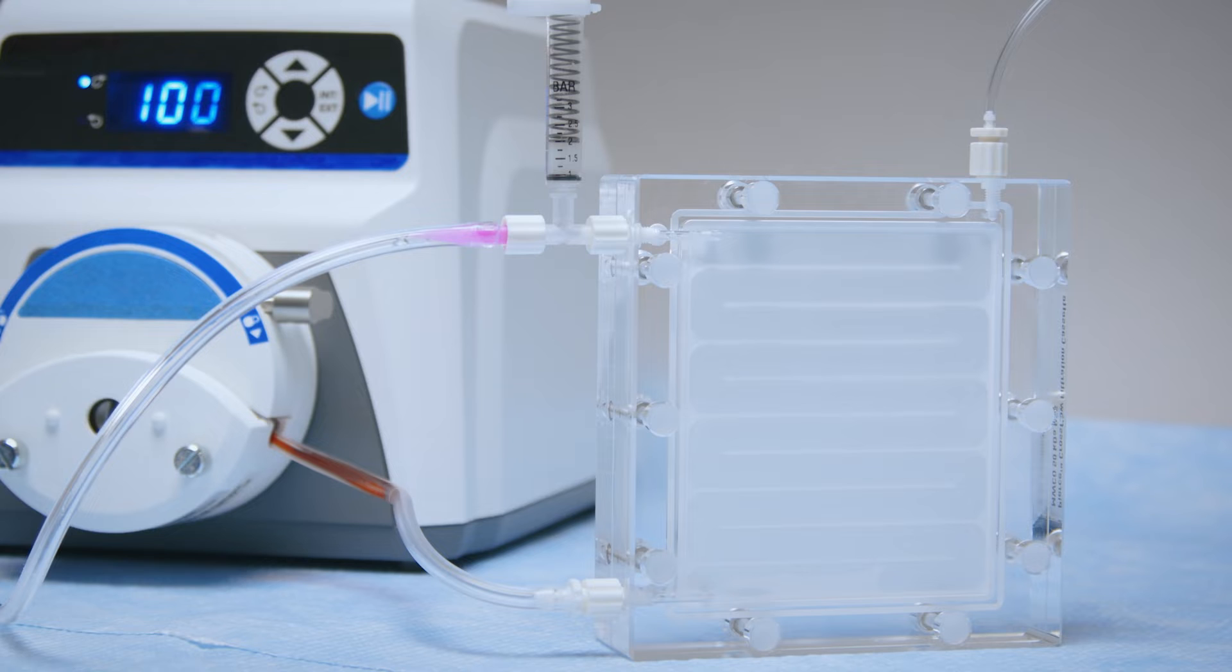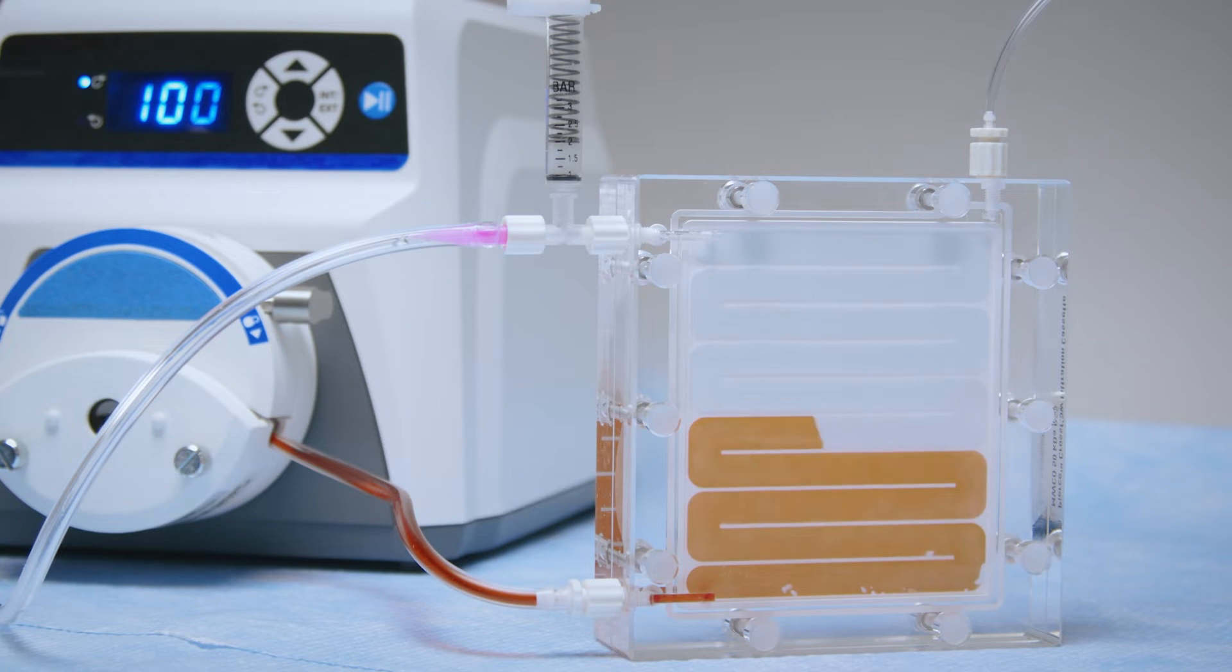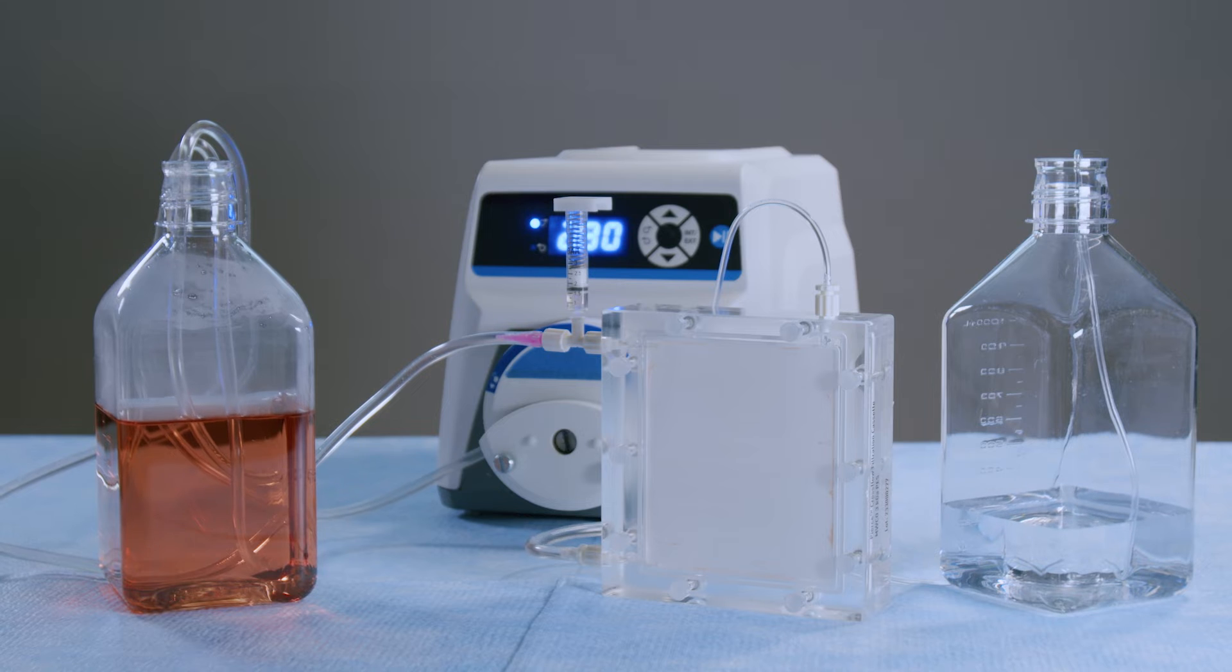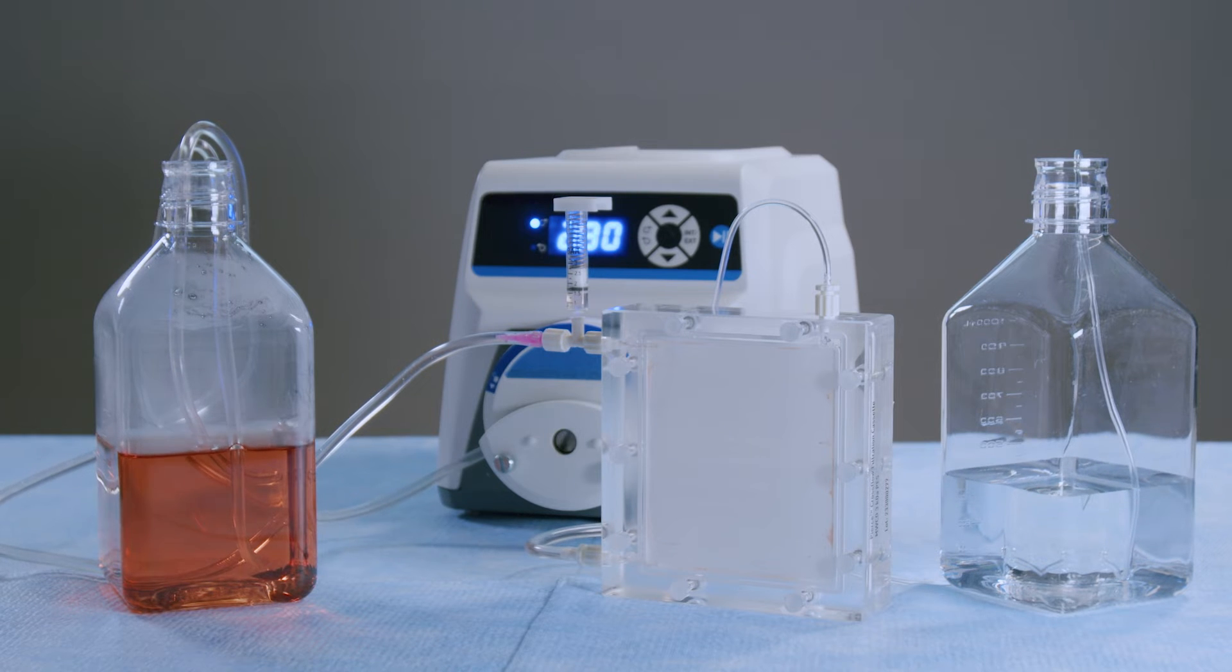The clear design of the CrossFlow cassette allows you to see your sample move through the channels in the cassette as it recirculates and concentrates. Here, you can see the sample color darken as it becomes more concentrated.